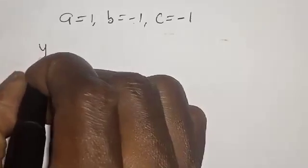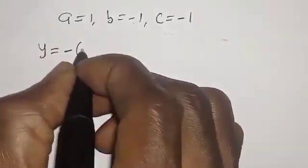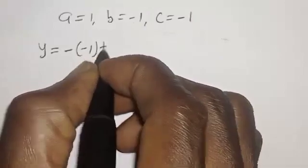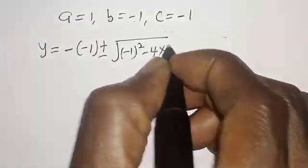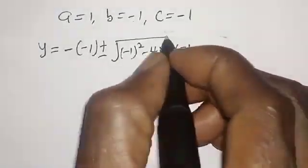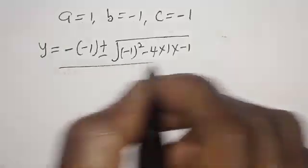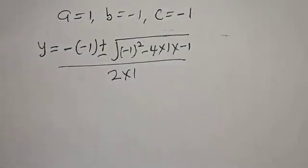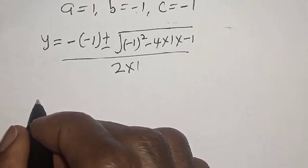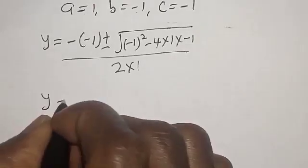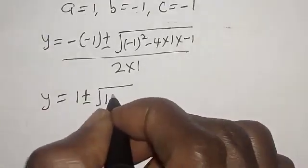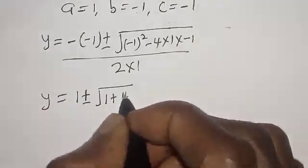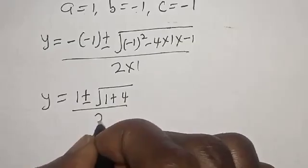Then y is equal to minus of minus 1, plus or minus square root of minus 1 squared minus 4 multiplied by 1 multiplied by minus 1, over 2 multiplied by 1. So y is equal to 1 plus or minus square root of 1 plus 4, over 2.